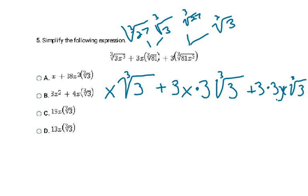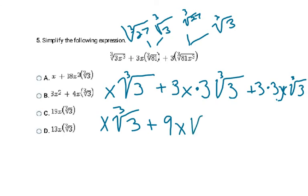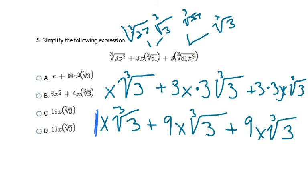Now looking at all three terms: the variables are all x, the radical parts are all cube root of 3, so they're like terms. First multiply the outside numbers — 3 times 3 is 9 — so the first simplified term is 9x∛3, and similarly the second is 9x∛3. There's an invisible coefficient of 1 on the original first term. So we add: 1 plus 9 plus 9 equals 19. The final answer is 19x∛3, which is letter C.